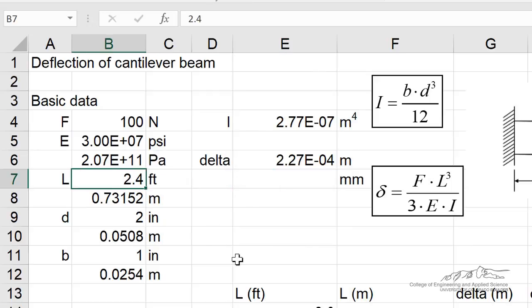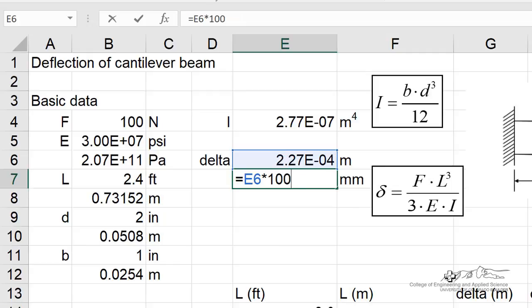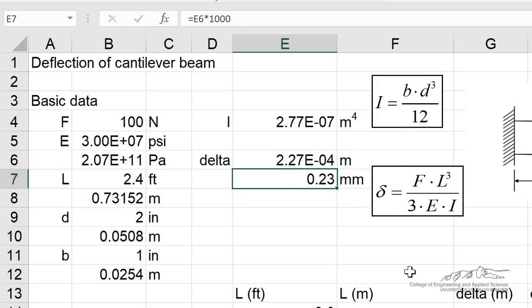When L is 2.4 feet, we get a deflection of about 2.3 times 10 to the negative 4th meters. So I can just take my deflection in meters and multiply it by 1,000 to get deflection in millimeters.